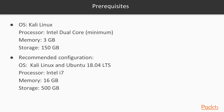These are the prerequisites: you're going to need Kali Linux installed as your OS, a processor of Intel dual core minimum, a memory of 3 GB, and a storage of 150 GB. The recommended configuration is Kali Linux and Ubuntu — specifically Ubuntu 18.04 LTS (long-term support) — with an Intel Core i7 processor, 16 GB of memory, and 500 GB of storage.